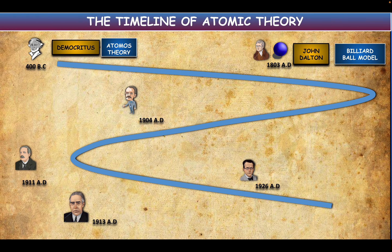Remember, a billiard ball is like what we use in pool today. Pool balls are spherical and super heavy because they're really dense. John Dalton back then just had solid billiards—they didn't have the stripes. Do you see that round dot? A lot of you, when I asked at the very beginning of the notes to draw a picture of what you thought an atom looked like, drew a circle that was colored in. Basically, you just drew a model using Dalton's billiard ball model.